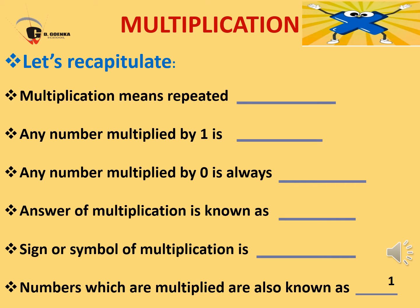Before moving on to our sum with carryover, let us recapitulate what is multiplication. Multiplication means repeated addition. Any number multiplied by 1 is the number itself. For example, 4 multiplied by 1 is equal to 4, 40 multiplied by 1 is equal to 40, or 54 multiplied by 1 is also equal to 54. Next, any number multiplied by 0 is always 0.